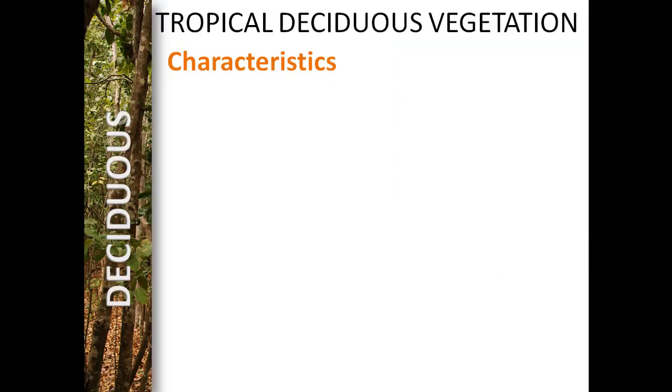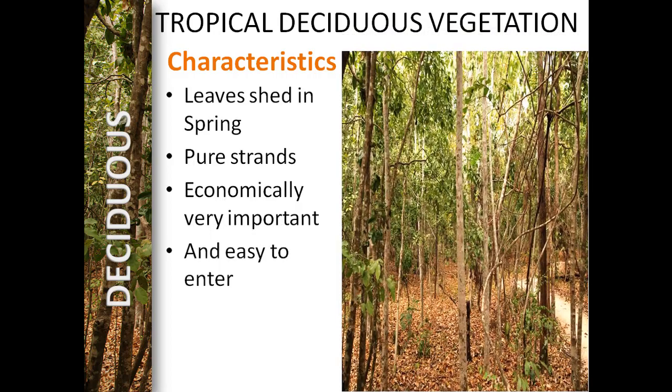Now we will see the second important type of forest covering a larger part of India: tropical deciduous vegetation. As you can see in this picture, this forest is different from the previous one — there is a lot of space between the trees, they are not so tall, and the canopy is not thick. There is a lot of foliage on the ground, and a path can be seen passing through the forest. The trees in this forest shed their leaves in spring or early summer as an adaptation to prevent moisture from evaporating. This forest has a pure strand of species, meaning it is monospecific, and these forests are economically very important and easily accessible.